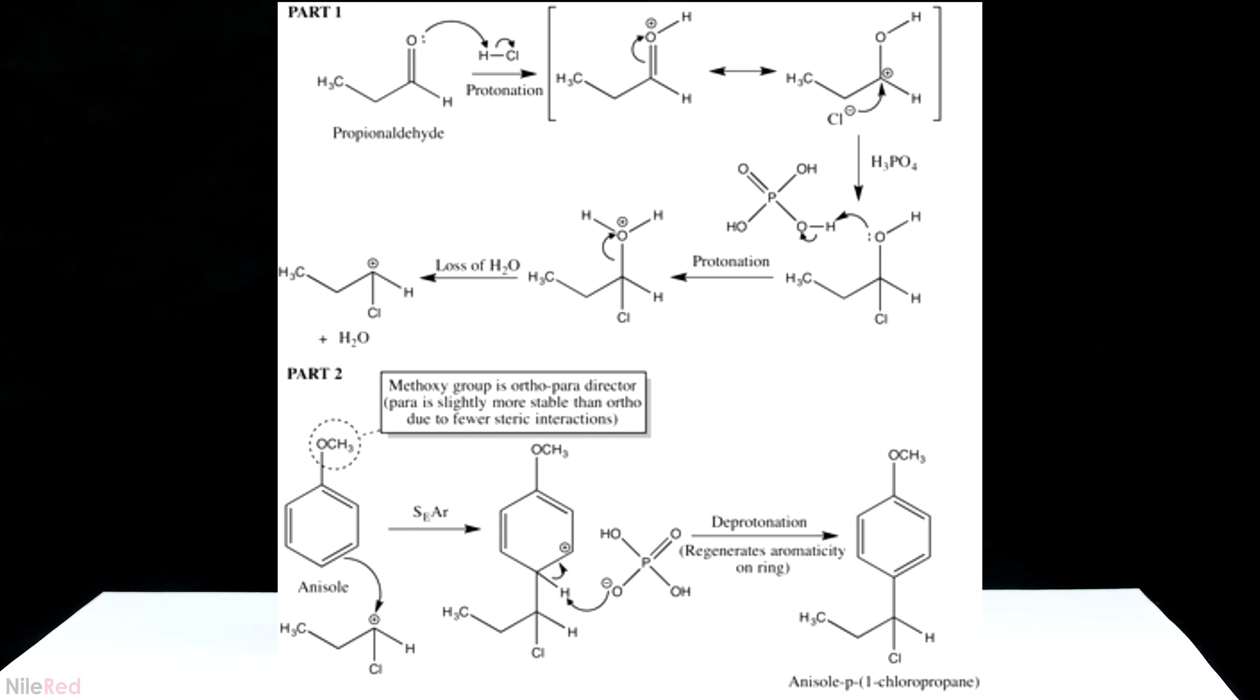If this carbocation were to form, we would probably get a hydride shift, and the positive charge would move over to the secondary carbon. With a positive charge on the secondary carbon, we wouldn't form our desired product.